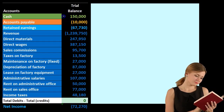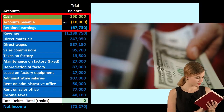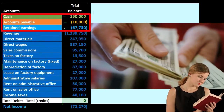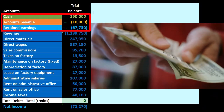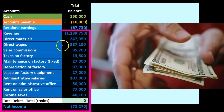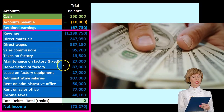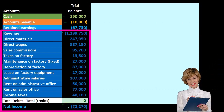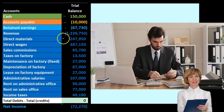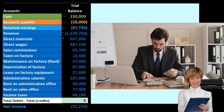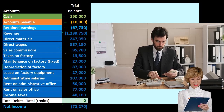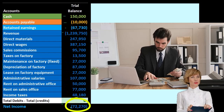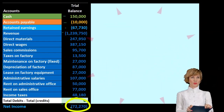So a very simplified trial balance — all we have is cash on the balance sheet and accounts payable, assets, liabilities — and then we have retained earnings and the income statement items where we have the revenue, the direct materials, the direct wages, the sales commission, the taxes, the maintenance, the depreciation, and so on. Revenue minus the expenses gives us net income of 72,270. Revenue being a credit represented with brackets, the expenses being debits represented with non-bracketed numbers.